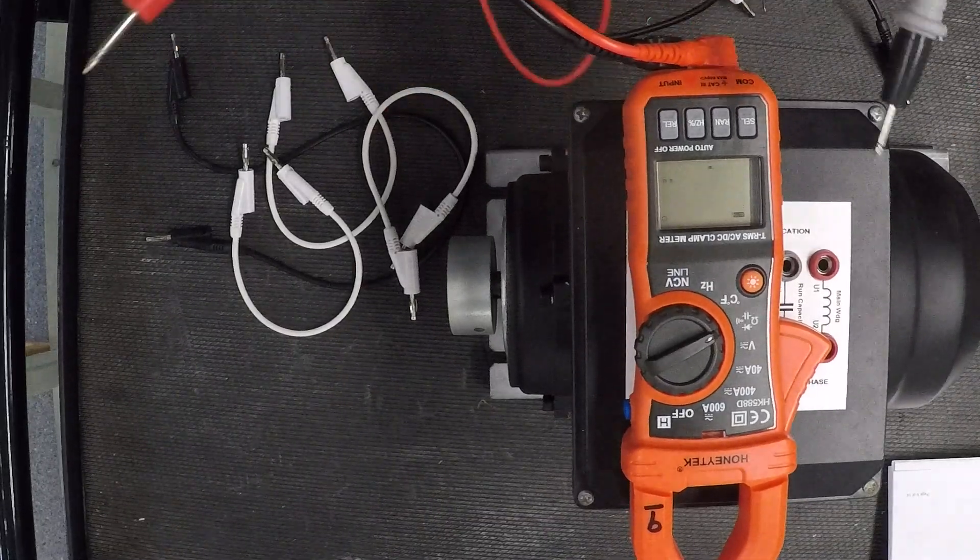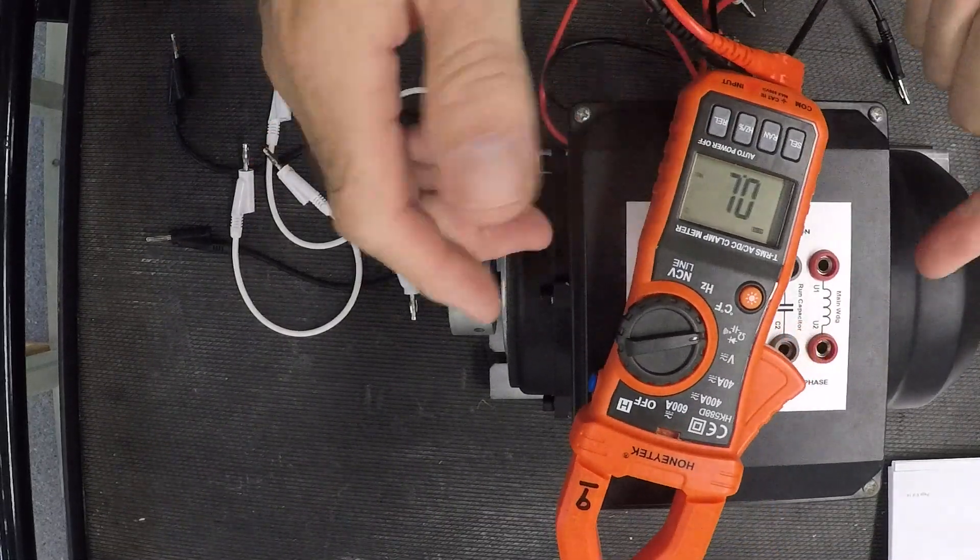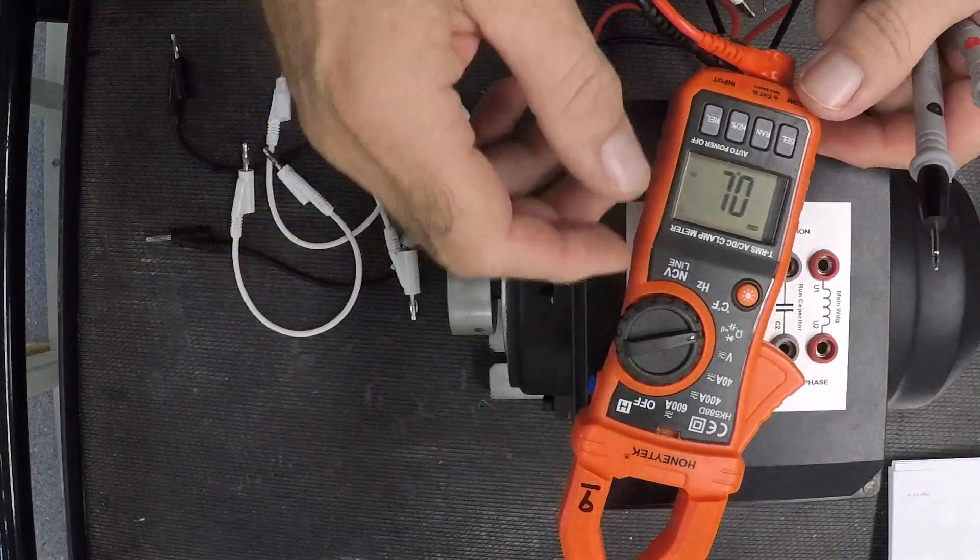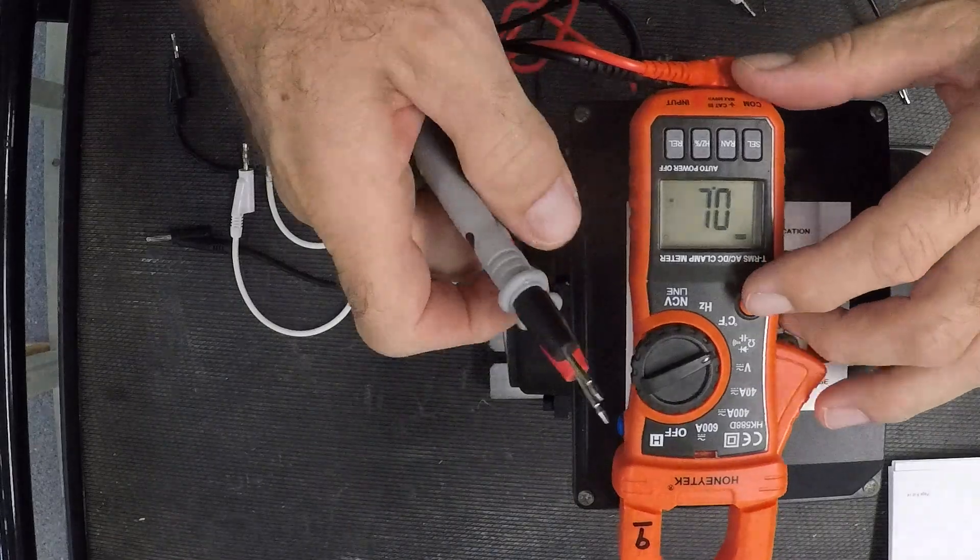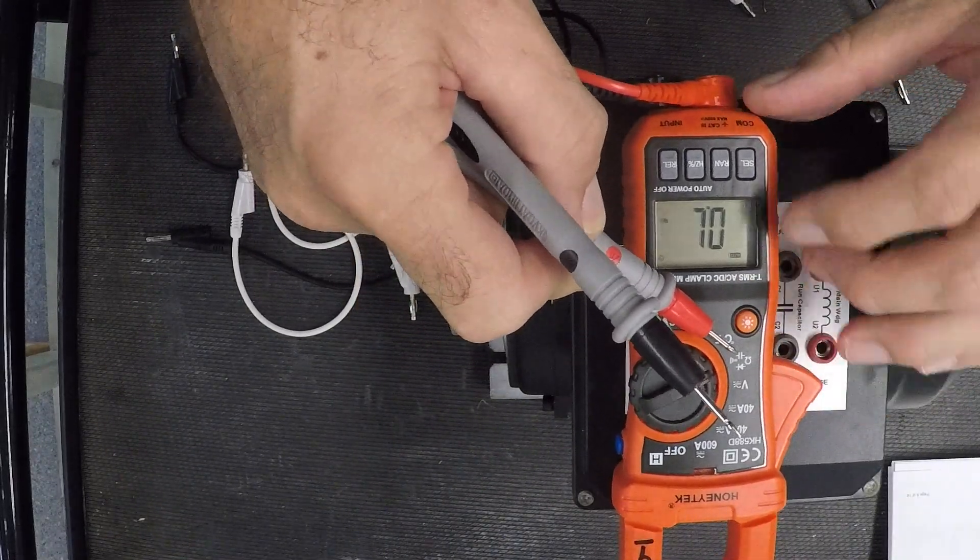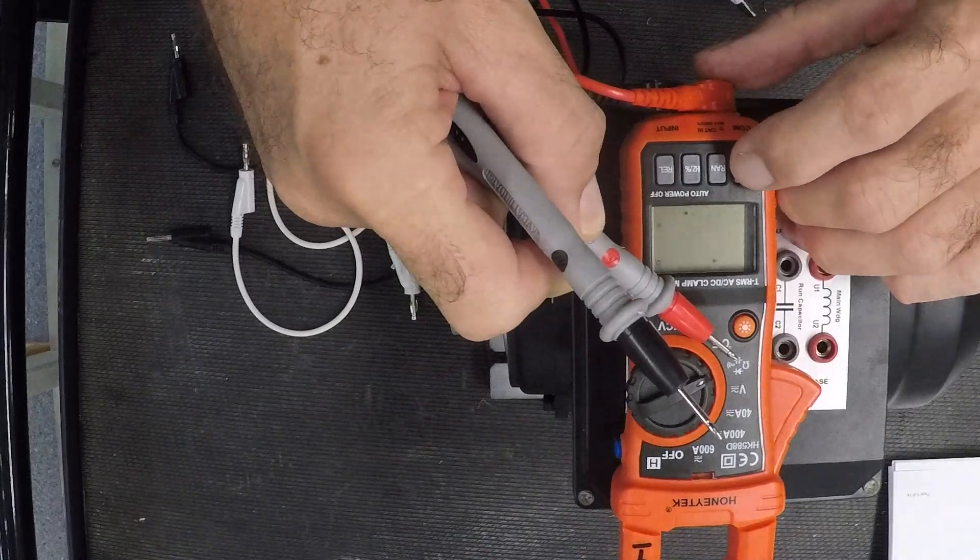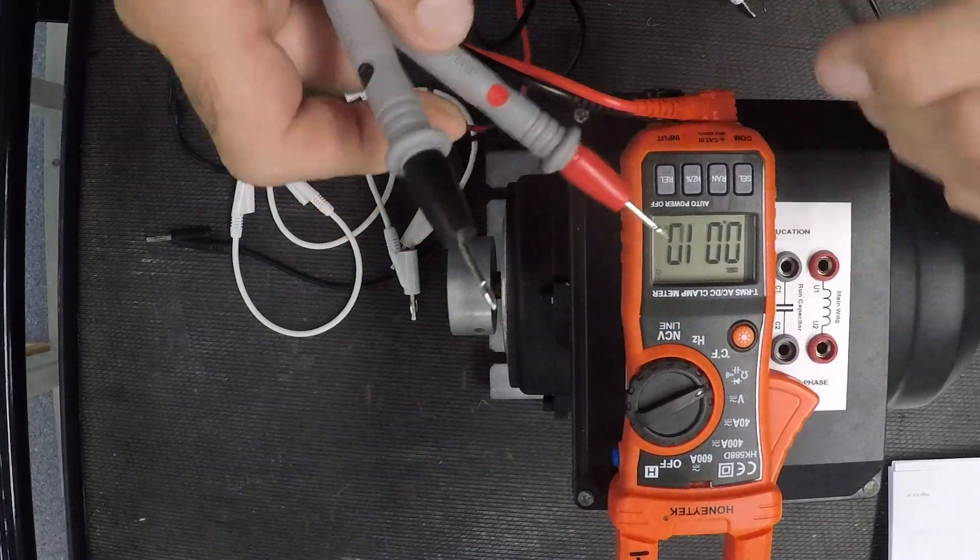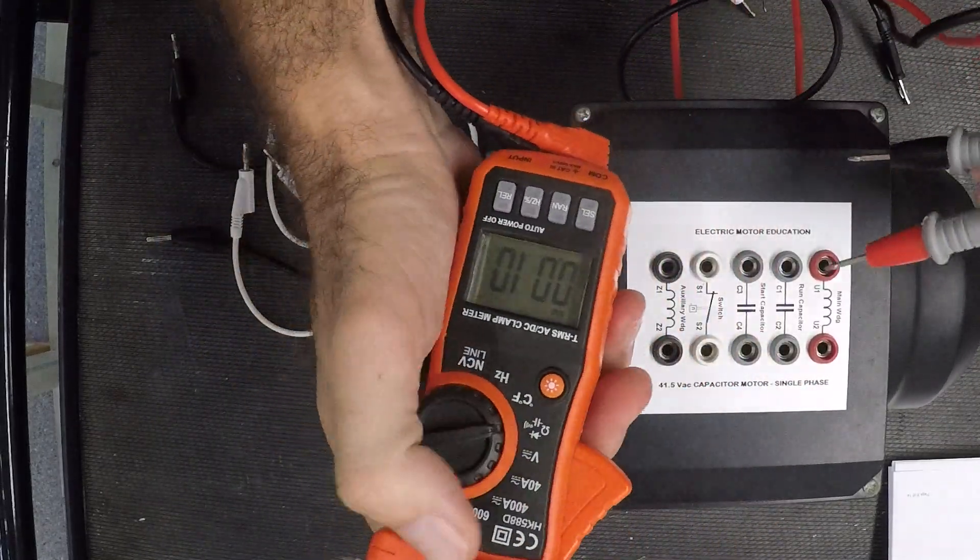Next thing I want to do is check my capacitors. Now this tester can actually do the capacitor—there's a sign for it. So if I go and select capacitors, there we go. It's showing me at the moment that I can do it.